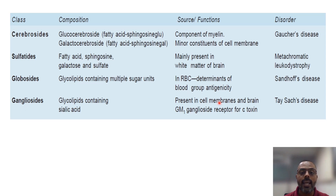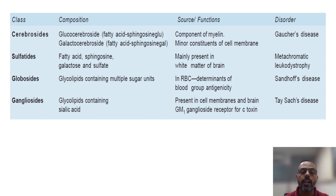Gangliosides are also present in the cell membrane. Ganglioside GM1 acts as a receptor for the toxin secreted from Vibrio cholerae, which causes cholera. The disorder associated with gangliosides is Tay-Sachs disease, which occurs due to the deficiency of the hexosaminidase A enzyme.